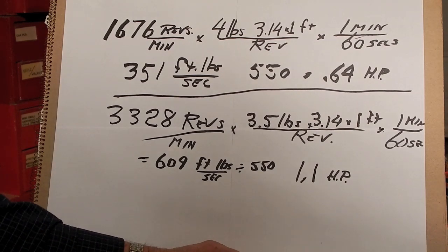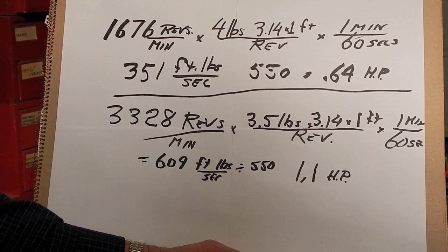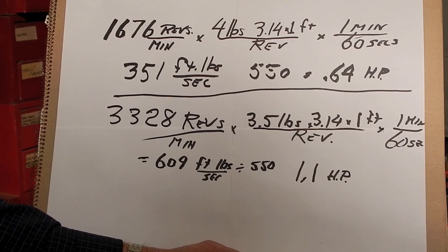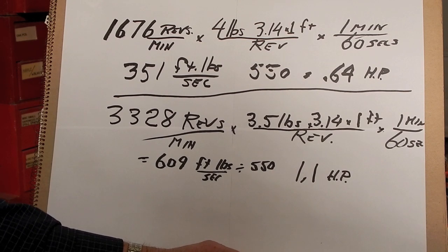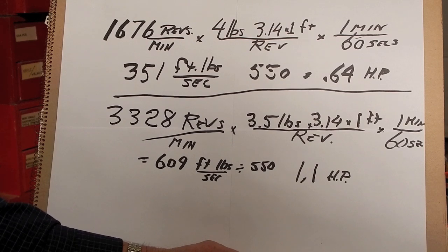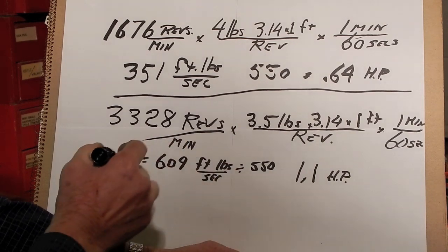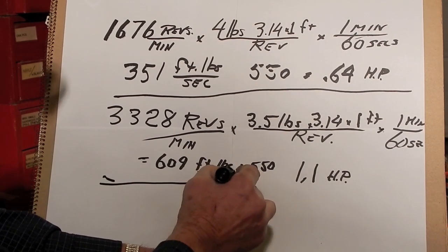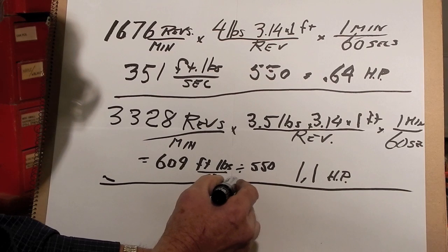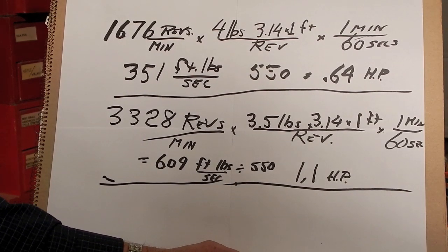Again, not bad for a three-quarter horsepower motor. So it shows that these motors appear to be rated very fairly. Again, I think at 1.1 horsepower this motor would overheat and shut down very quickly, but could operate continuously at three-quarters of a horsepower. It'll be interesting to see what a gasoline engine does.